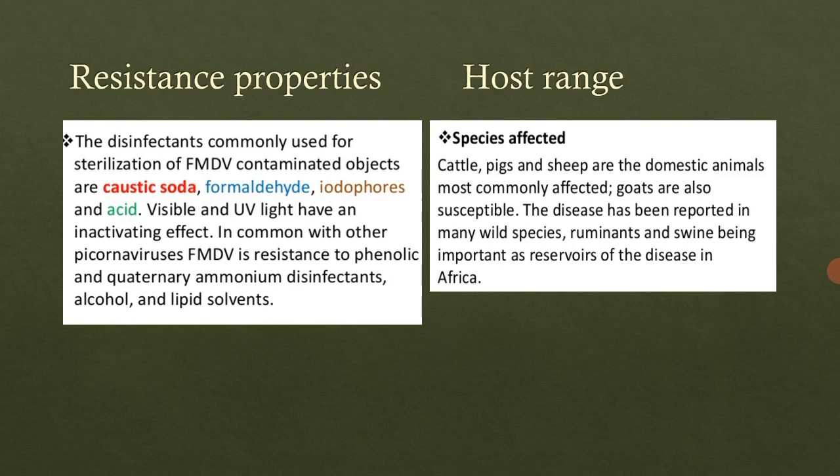Now we will see the host range — which animals can get this viral infection. As mentioned, this infection is only in cloven-footed animals, which includes cattle, pigs, sheep, cows, and goats — these are the domestic animals most commonly affected. The disease has also been reported in many wild species; ruminants and swine are important reservoirs of the disease in Africa.